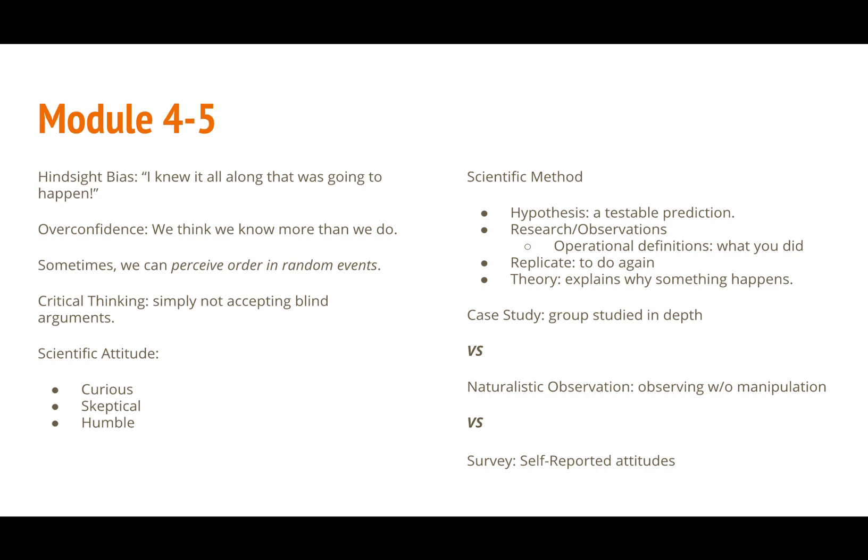In psychology there are three main types of research. There is case study, naturalistic observation, and surveys. Case studies is when researchers study a group in depth. With case studies it's easy to control and you have rich descriptions of subjects. However there are things such as observer bias that can hurt the credibility of the experiment.